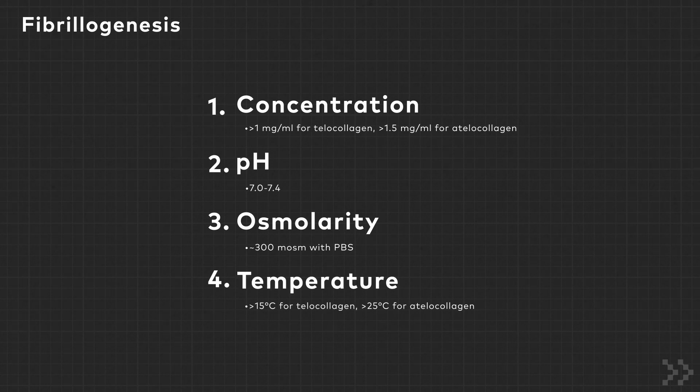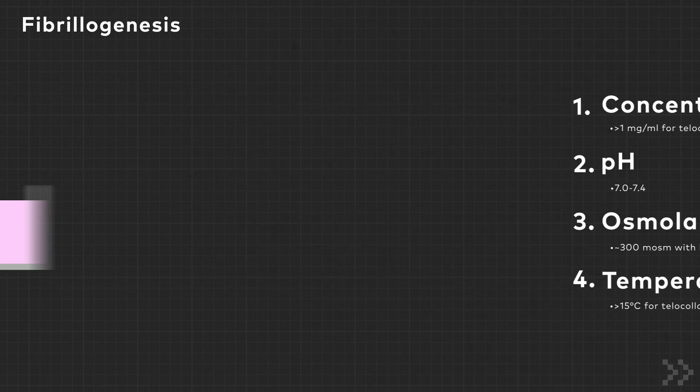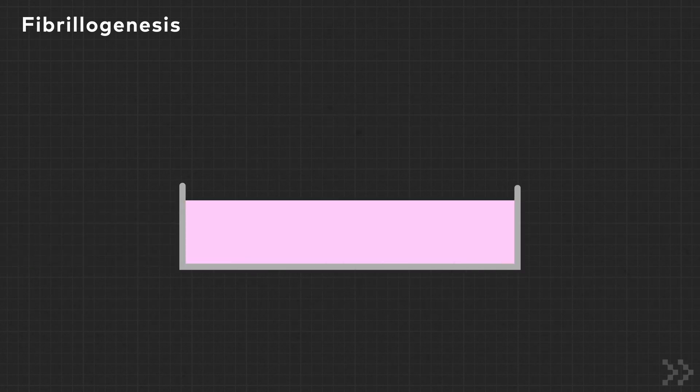Fourth, temperature. Warming the collagen to higher than 15 degrees Celsius for telocollagen or 25 degrees Celsius for atelocollagen will induce gelation. Finally, cells can be incorporated into collagen gels using several methods, including seeding underneath the gel, embedding within the gel, or seeding on top of the gel.